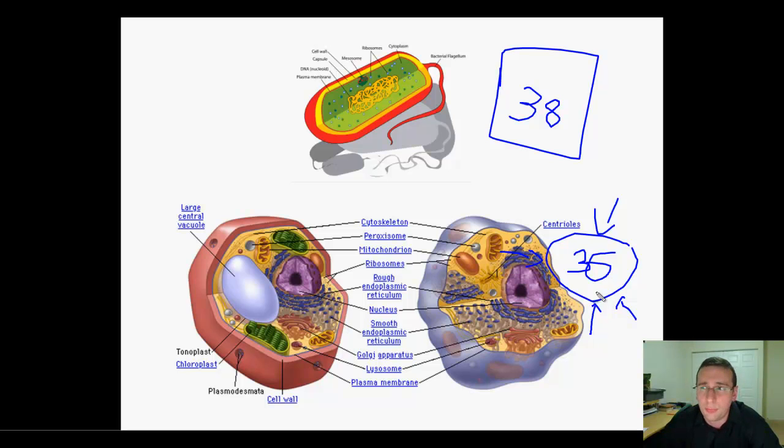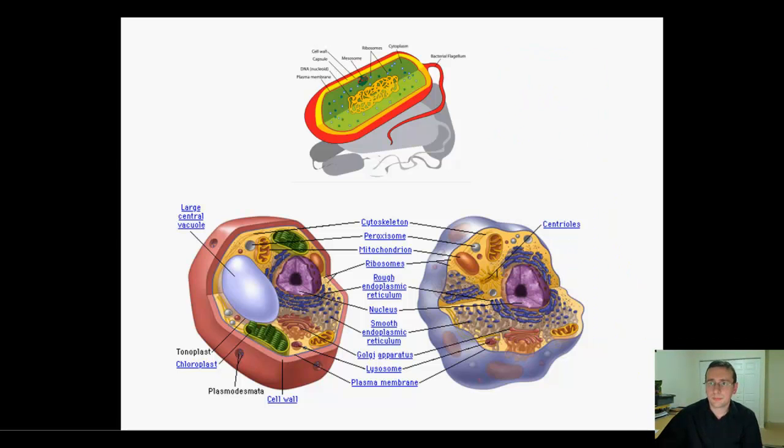Now, while some life forms use electron acceptors other than oxygen and produce things other than water, they all pretty much use a similar process. And this universality of the process speaks to the similarity between life forms and the originality of the evolutionary process of one life form leading to many.